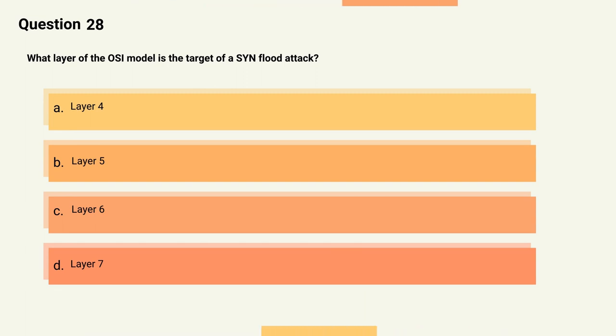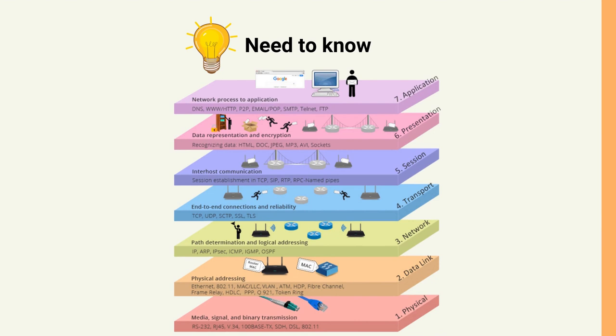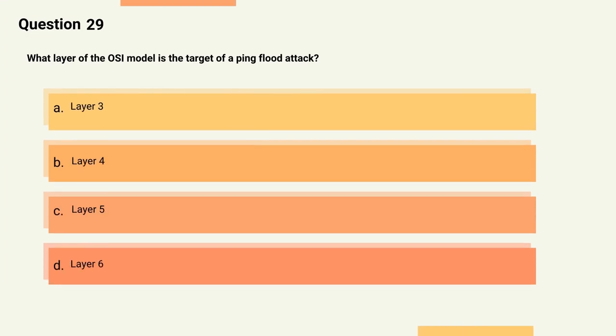Question 28: What layer of the OSI model is the target of a SYN flood attack? Options: A) Layer 4, B) Layer 5, C) Layer 6, D) Layer 7. The correct answer is Option A, Layer 4. Explanation: A SYN flood attack is a type of denial of service (DoS) attack that targets the transport layer, Layer 4, of the OSI model by flooding the target server with a large number of SYN requests.